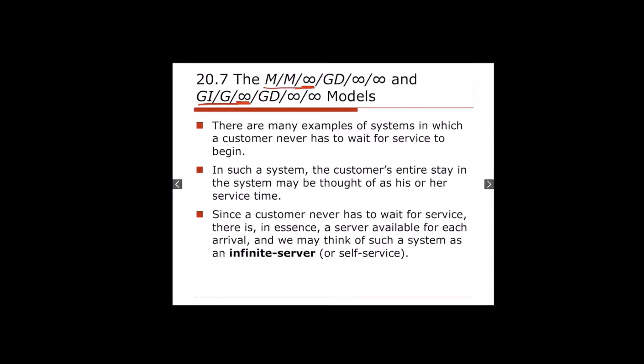In the first system, the inter-arrival time and service time have exponential distributions. However, in the second system, the inter-arrival time and service time can have any type of distribution — just a general distribution. We want to see how we can analyze these types of queuing systems.